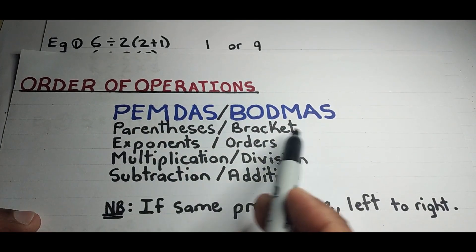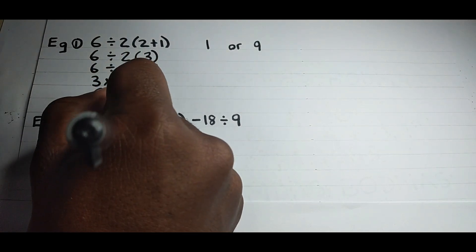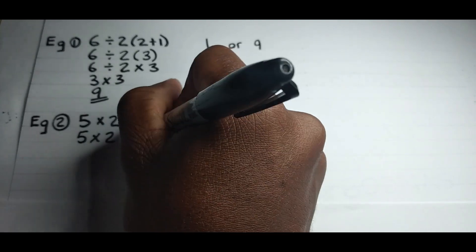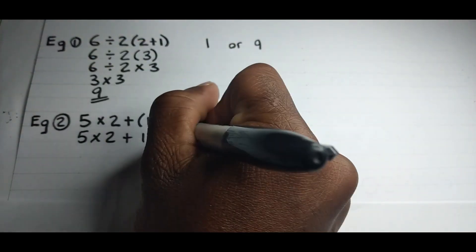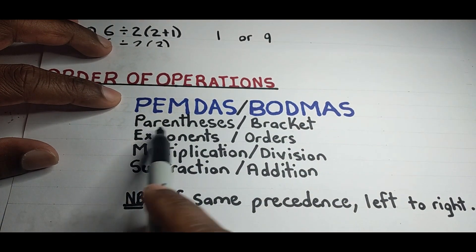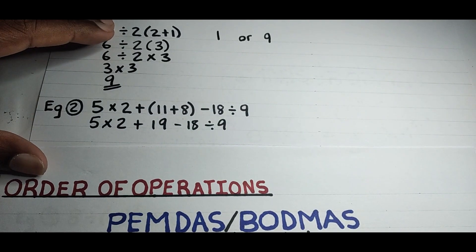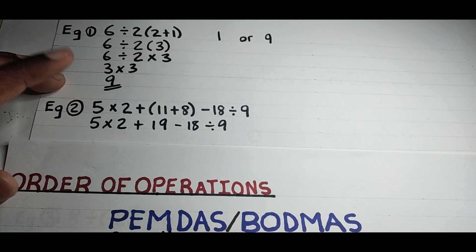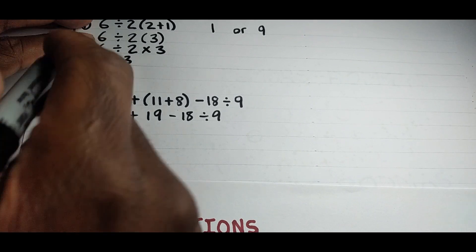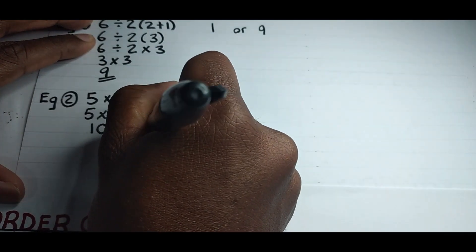For example two, we again follow the order of operations — checking for brackets, exponents, then multiplication and division. We have a bracket, so we solve that first: 11+8 = 19. We keep the rest — minus 18÷9 — unchanged for now. There are no exponents. We then look for multiplication and division, working left to right, so we multiply 5×2 first, giving us 10.